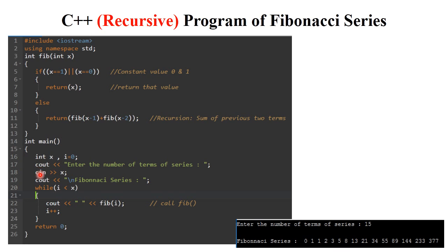cout is used for printing and cin is used for reading input. The program prints: 'Enter the number of terms in the series.' If you enter 15, cin reads the value 15 into variable x.